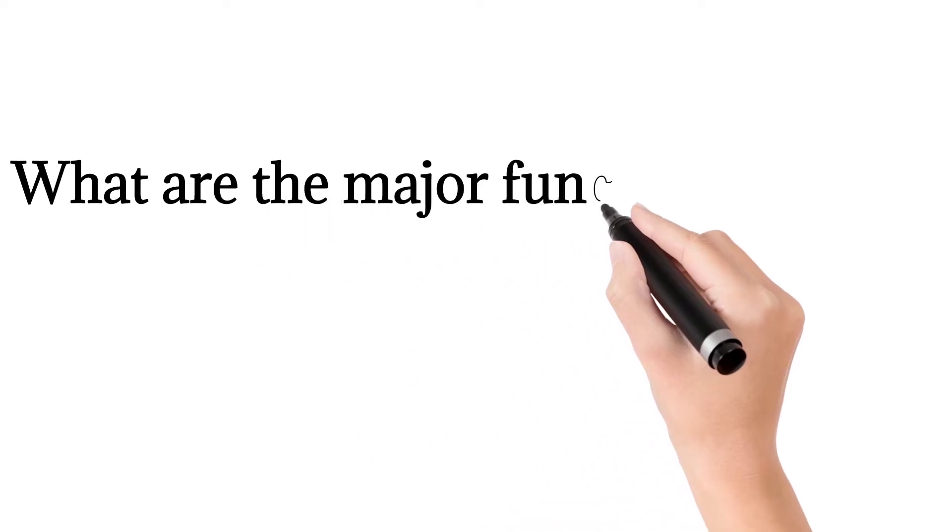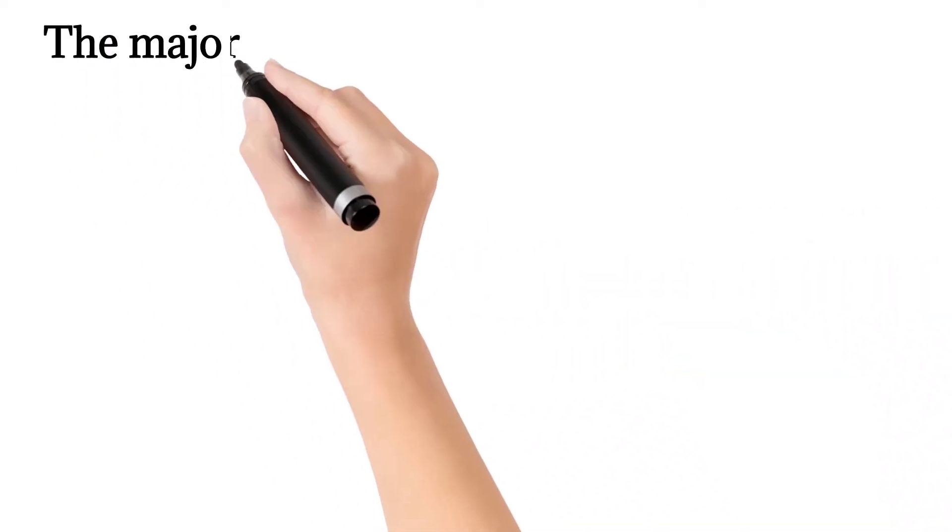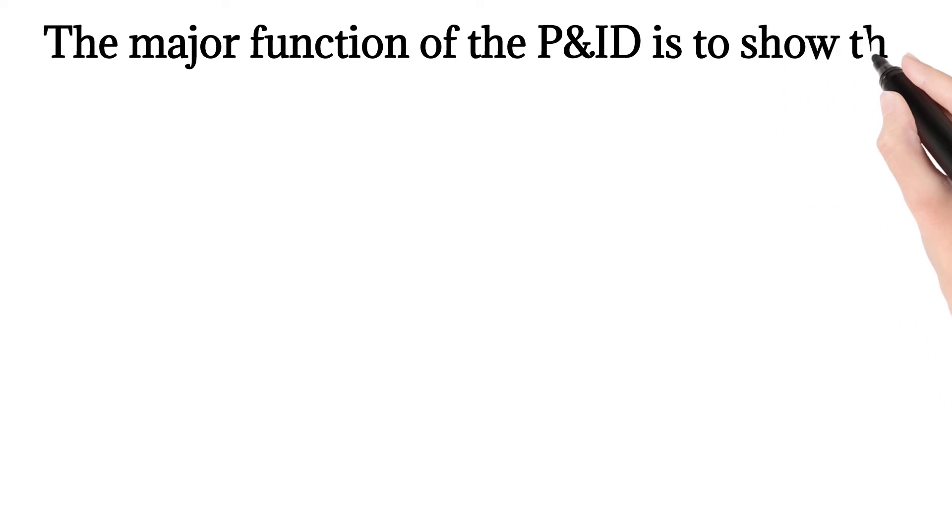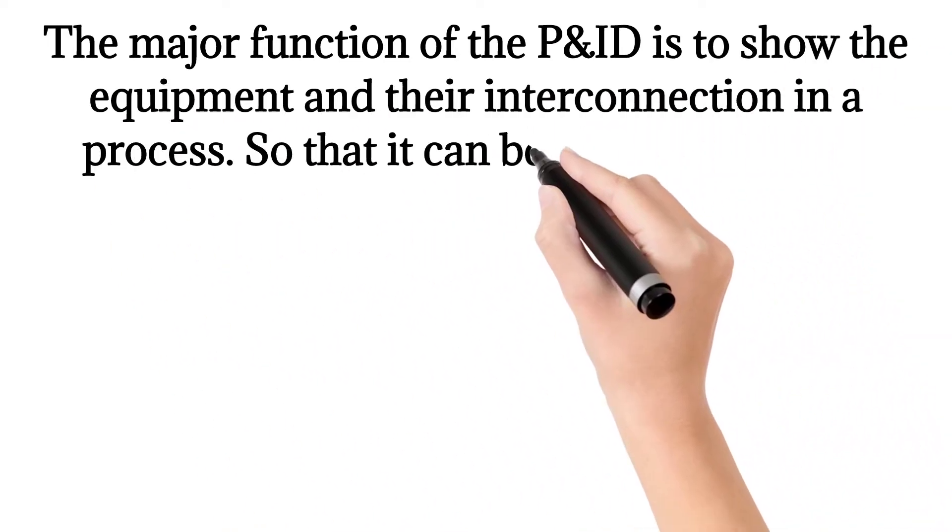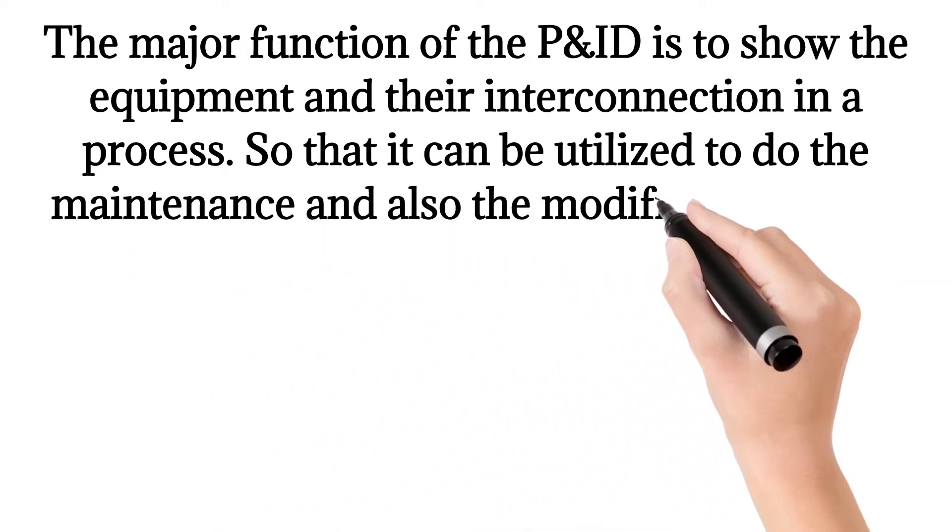What are the major functions of the P&ID? The major function of the P&ID is to show the equipment and their interconnection in a process so that it can be utilized to do the maintenance and also the modification of the process.